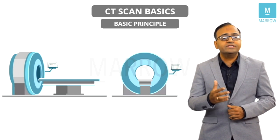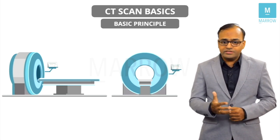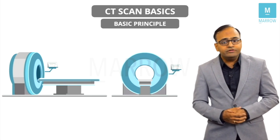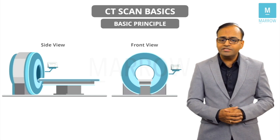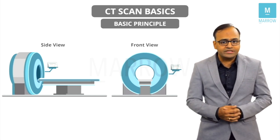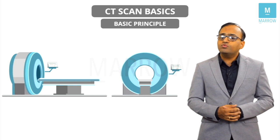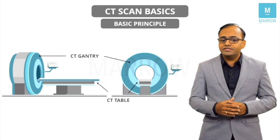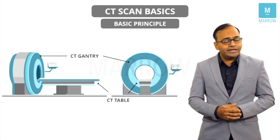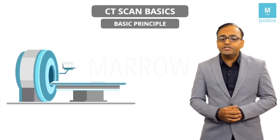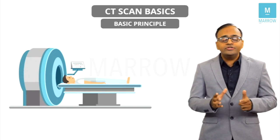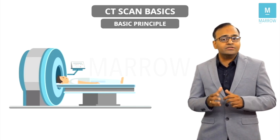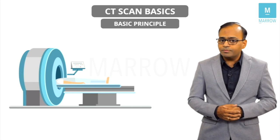You must have seen a CT scan machine at least once. This is how the machine looks from the front and from the sides. There is a big round structure in the CT scan machine, and this big round structure is called the CT scan gantry. There is also a CT scan table, and it is on this table that the patient is going to lie. The table slides inside the machine — this is how the patient goes into the bore, and that is how a CT scan is performed.